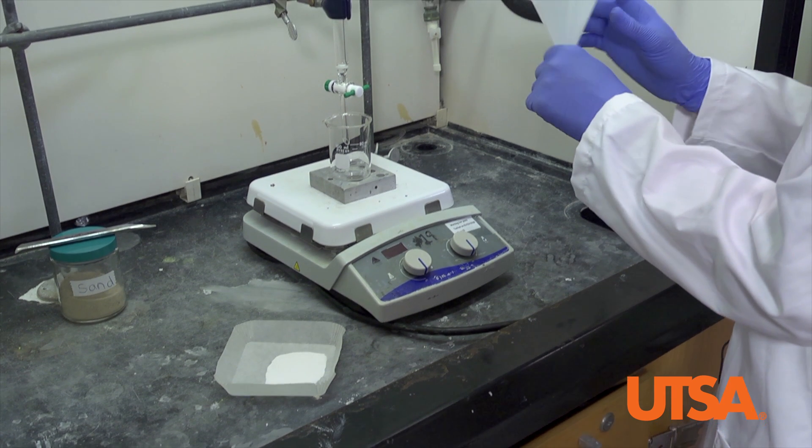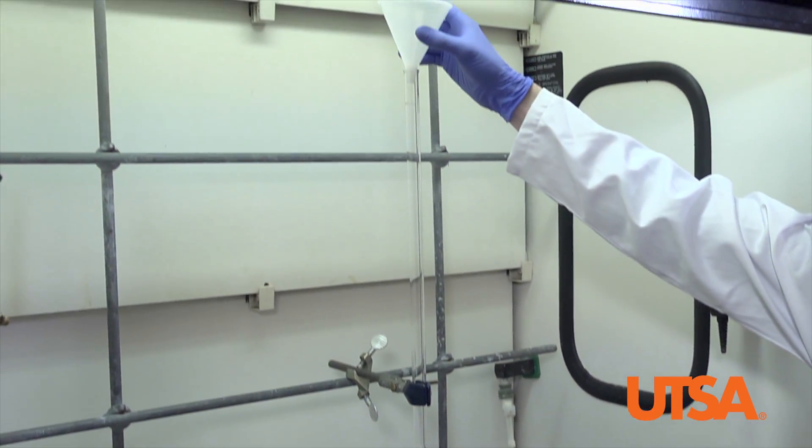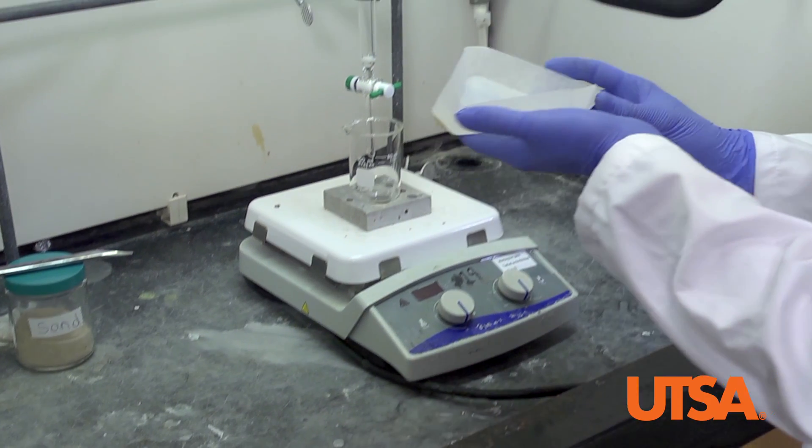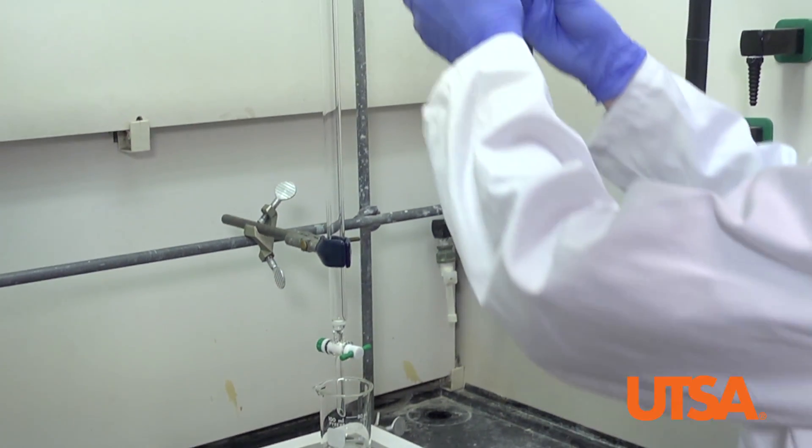Begin by securing the funnel to the top of your column. Next, add 12 grams of pre-weighed alumina to the column through the funnel.